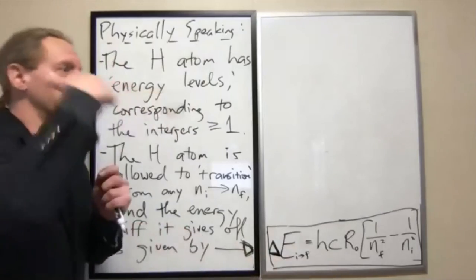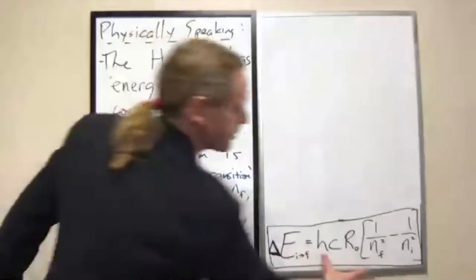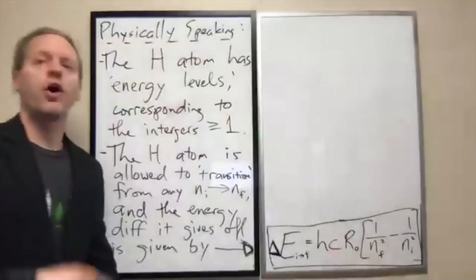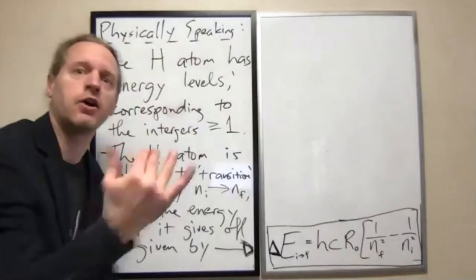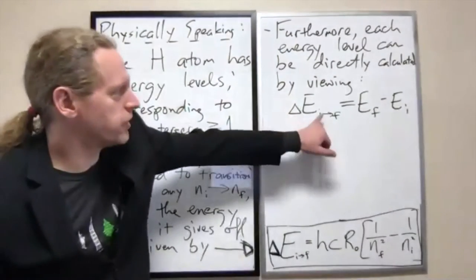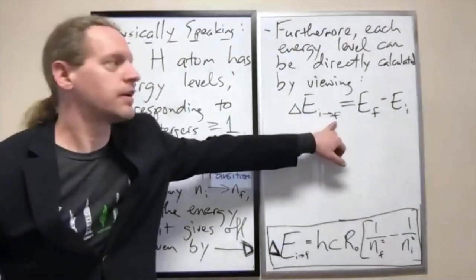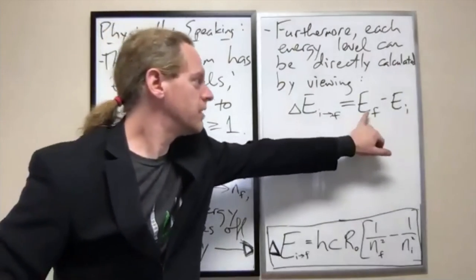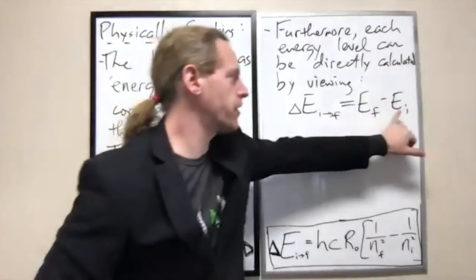If it loses X amount of energy, it gives off exactly that amount. It starts at some initial energy level, it loses that, it goes to the next one. We can associate the loss of energy in going from I to F as having two separate energies.